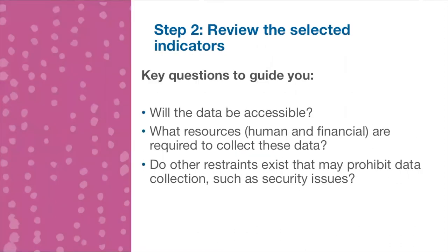The second step, once you have selected the indicators, is to review them. Key questions to guide the review include: Will the data be accessible? What human and financial resources are required to collect the data — noting that primary data collection will be more resource-heavy? Are there any restraints in the context, such as security issues, that might prohibit data collection? Answering these questions will help determine whether the indicators are feasible in your context.